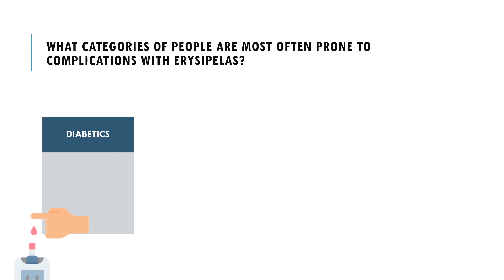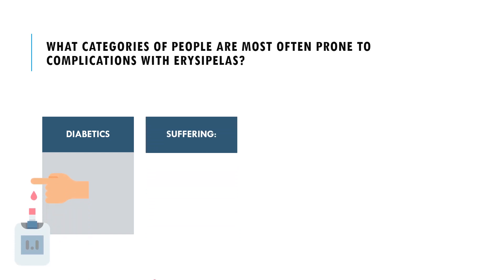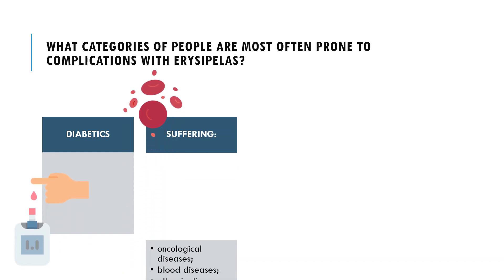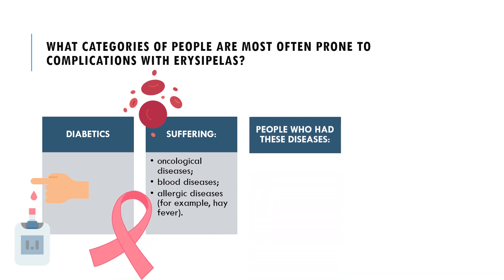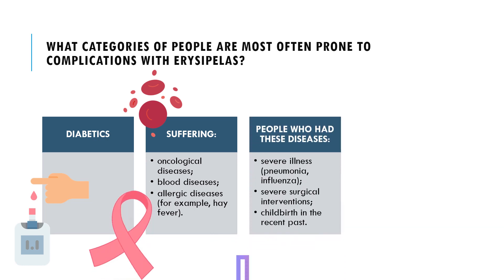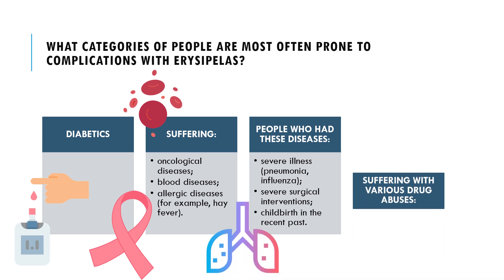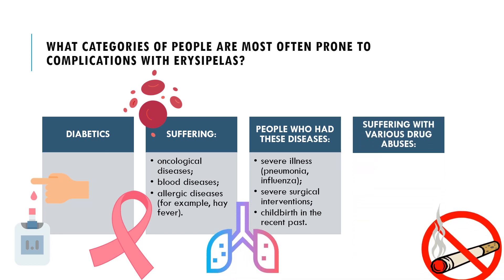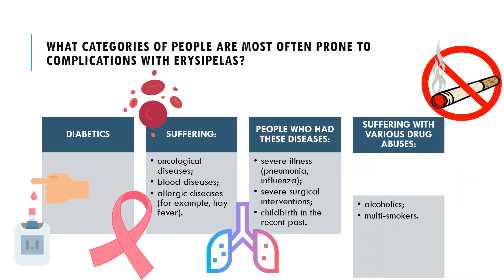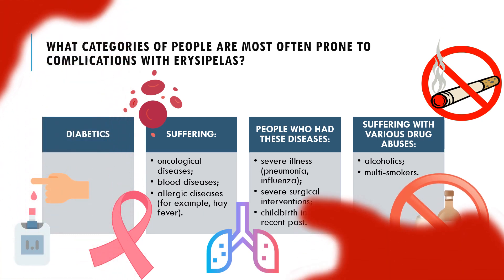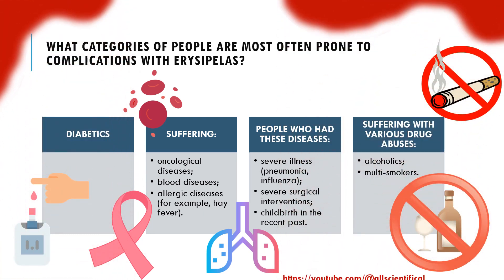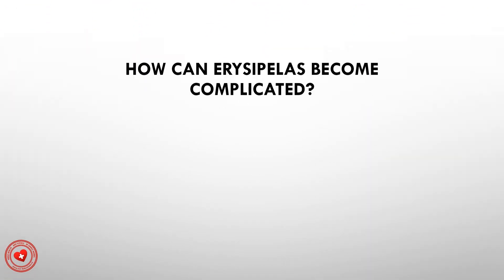What category of people are most prone to complications with erysipelas? These include primarily: diabetics, those suffering from oncological disease, blood disease, allergic diseases such as hay fever, people who have recently undergone several concurrent illnesses (pneumonia, influenza), several surgical interventions or childbirth, and those suffering from various substance abuse, alcoholism, or heavy smoking.